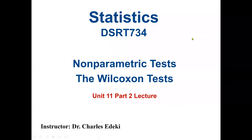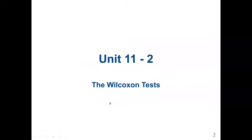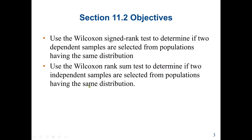Welcome to Statistics DSRT 734. We continue with the non-parametric test. In our previous lectures, we went through the sign test. In these lectures, we will go through the Wilcoxon test. Our main objective is to use the Wilcoxon signed-rank test to determine if two dependent samples are selected from populations having the same distribution, and also the Wilcoxon rank-sum test for two independent samples.